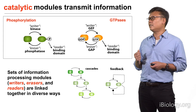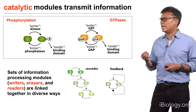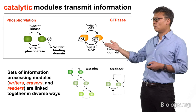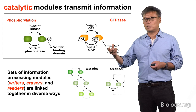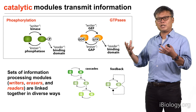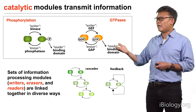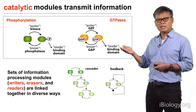Let me tell you about the different types of domains. One class are catalytic modules that are involved in directly transmitting information. A good example are the enzymes involved in phosphorylation — kinases and phosphatases. Kinases will put on a phosphate onto a target protein, and that phosphate might change the conformation or the activity of that protein, leading to some downstream effect. That phosphate can be taken off by a corresponding complementary eraser catalytic function — in this case a phosphatase.